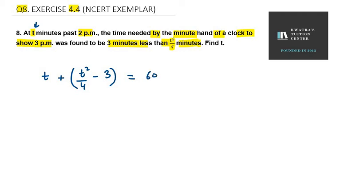Now you need to solve this equation to find the value of t. Let's find out with the help of LCM. We need to take LCM on the left hand side. So it is 4t plus t square minus 12 equals 60.